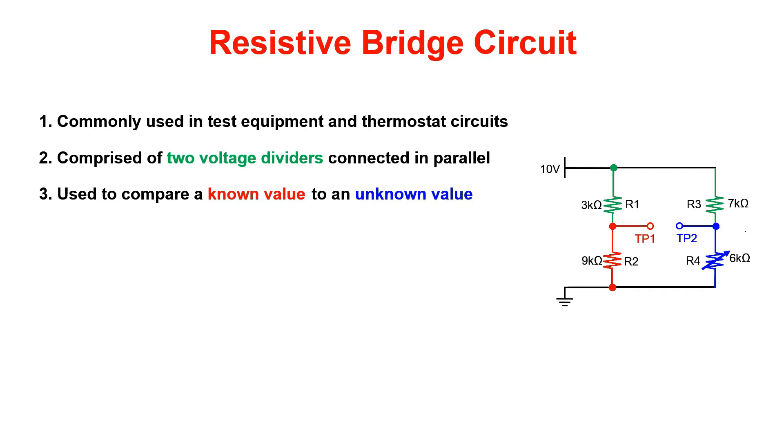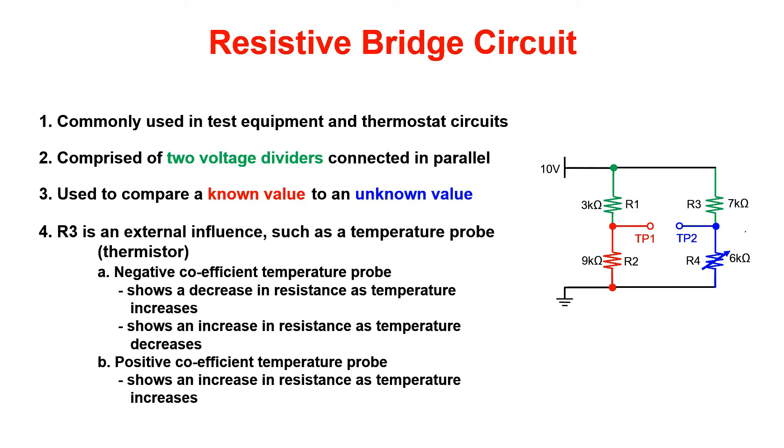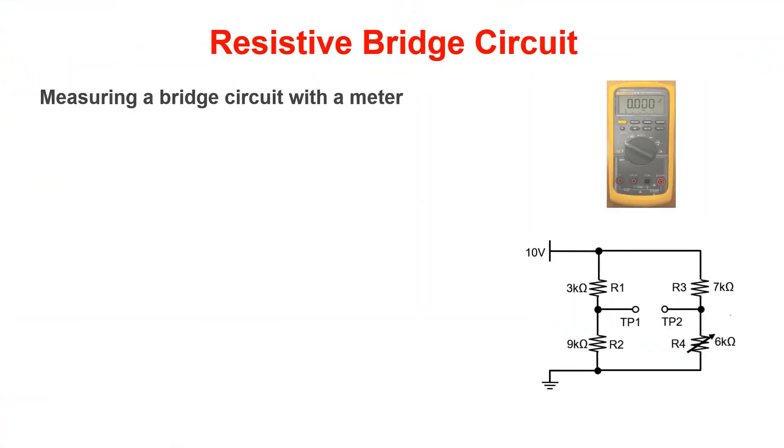Negative coefficient temperature probes would show a decrease in resistance as temperature increase and shows an increase in resistance as temperature decreases. Positive coefficient temperature probes will show an increase in resistance as temperature increases. This brings us to measuring a bridge circuit with a meter.